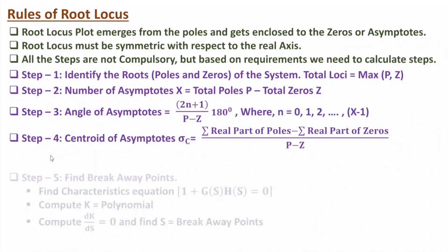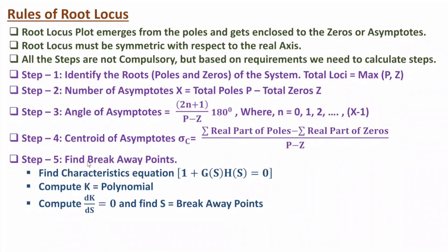The fifth step is to identify breakaway points, and this is only calculated if required. First we identify the characteristic equation: 1 + G(s)H(s) = 0. Based on this equation we identify the value of constant K as a polynomial, then differentiate K with respect to S, set that equal to 0, and solve for the roots of S — those are the breakaway points. Remember these steps are not compulsory and are computed only based on requirements.